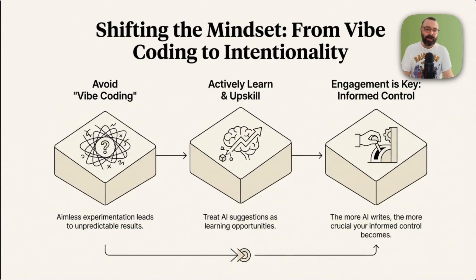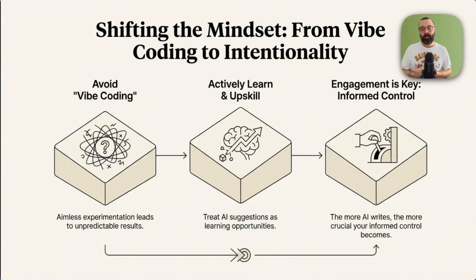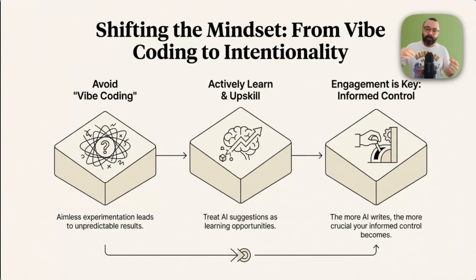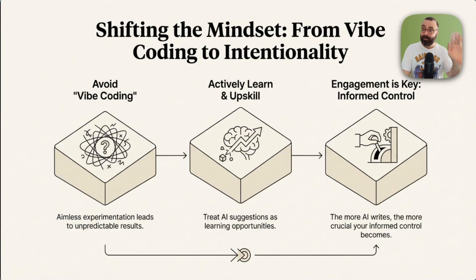Firstly, avoid Vibe Coding. Aimless experimentation leads to all types of unpredictable and horrible results. Use the process I'm about to show you as a way to actively learn and upskill, and recognize that engagement is key — informed control. The more the AI writes, the more you need to be in the loop as a thinking partner. Don't outsource the thinking, which is some of the most important and fun stuff.